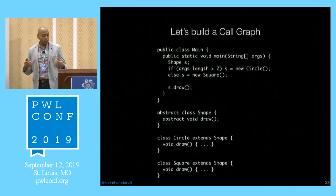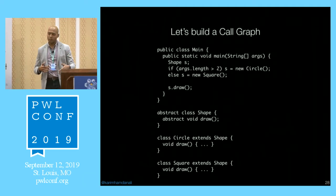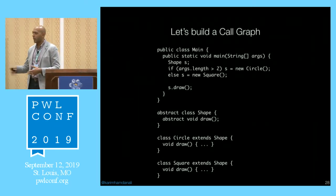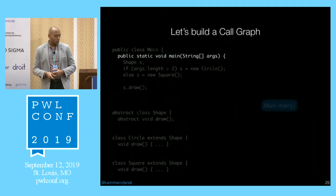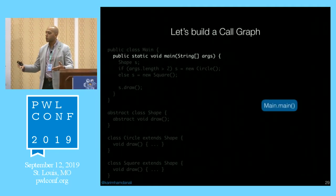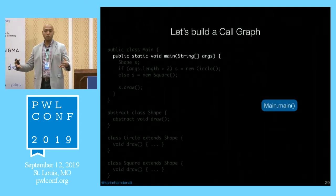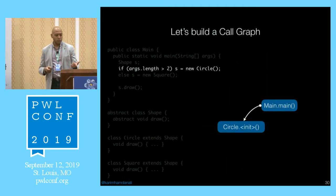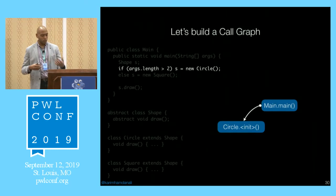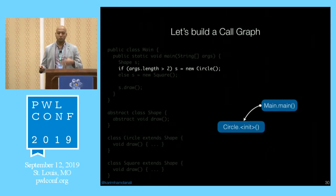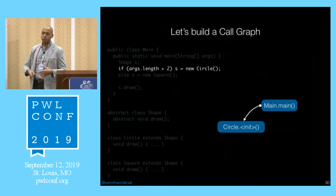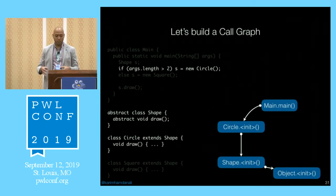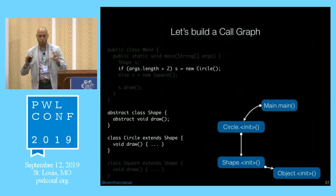Let's build a call graph. In this Java code, you have a main class with one main method as the entry point, a small abstract class, and two classes that inherit from it. The main method is the first node. Following it, the if-statement creates a Circle object, so we call Circle.init, then Shape.init, then Object.init — all the way up the hierarchy. The else creates a Square, calling Square.init, Shape.init, and Object.init similarly.